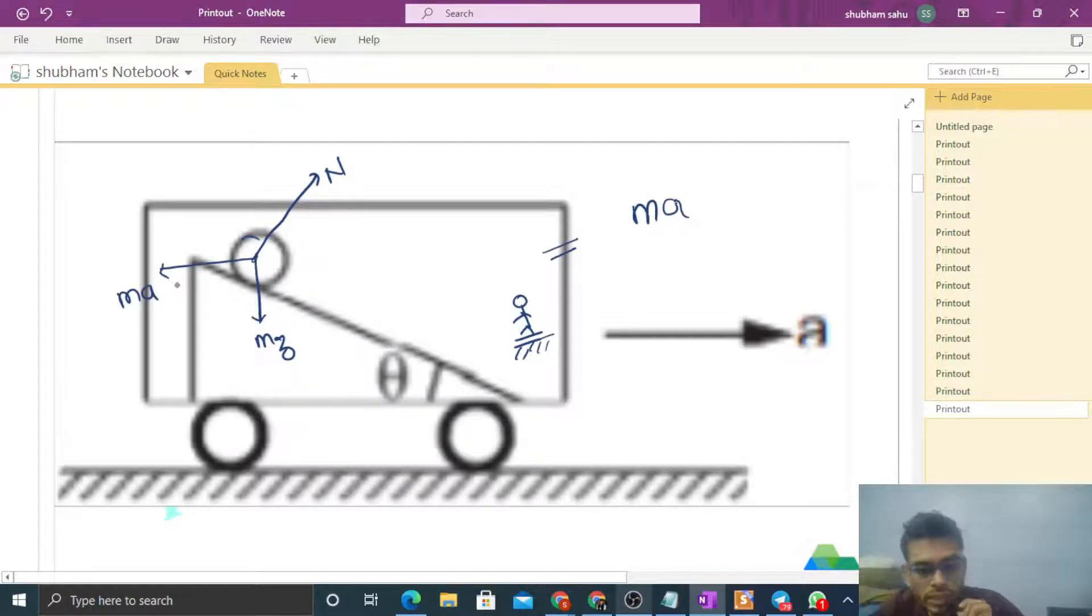The pseudo force acts at the center of mass—it always acts at the center of mass. Now we check the net force. First, take components of forces parallel to the incline and perpendicular to the incline. So look: mg cos theta and mg sin theta.